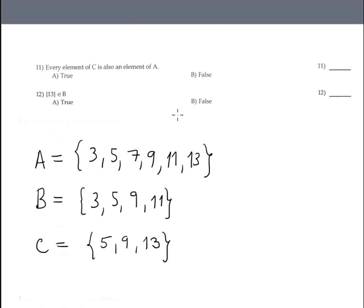Number 11 is every element in C, which is 5, 9, and 13, is also element in A. Let me see: 5 is here, 9 is here, and 13 is here. It's true.